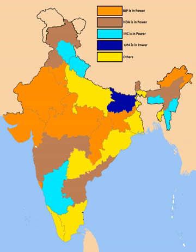First-past-the-post requires concentrated areas of support for large representation in the legislature, whereas proportional representation better reflects the range of a population's views. Proportional systems may have multi-member districts with more than one representative elected from a given district to the same legislative body, and thus a greater number of viable parties. Duverger's law states that the number of viable political parties is one plus the number of seats in a district.